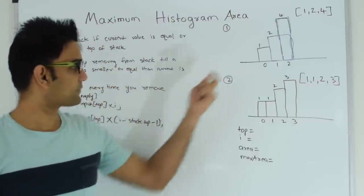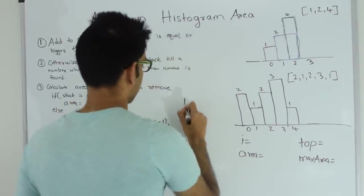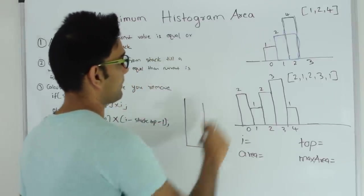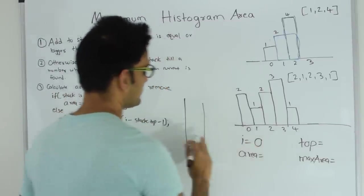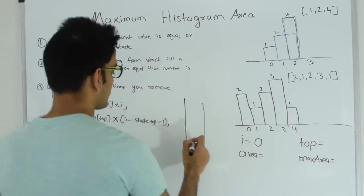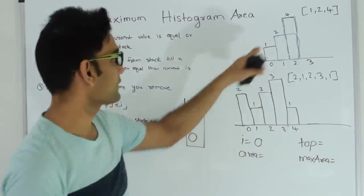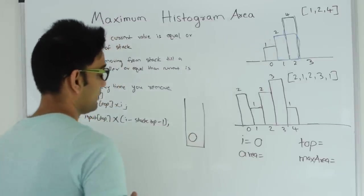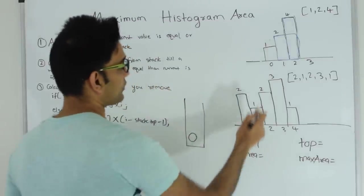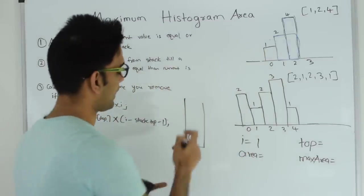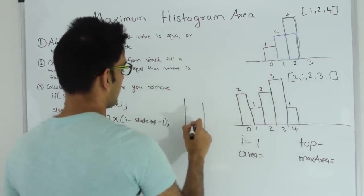Let's try these steps on a few examples. Starting with array [1, 2, 4], i is initially 0. Since the stack is empty, we put i into the stack. Notice how we're putting the index in the stack and not the actual value. Then i becomes 1. Since the value at i, which is 2, is greater than the value at the top of the stack which is 1, i can go into the stack so we add index 1.